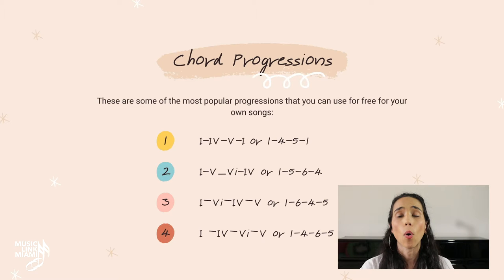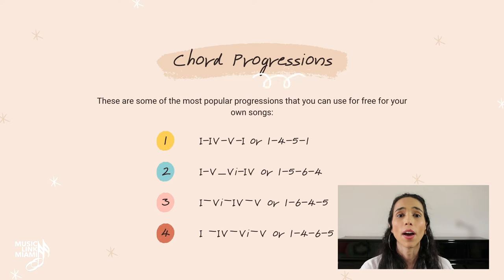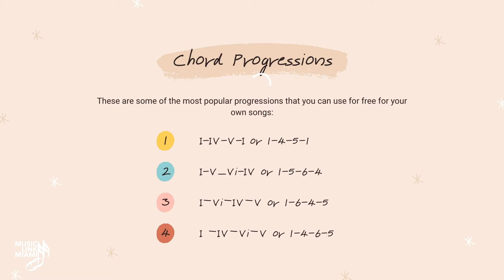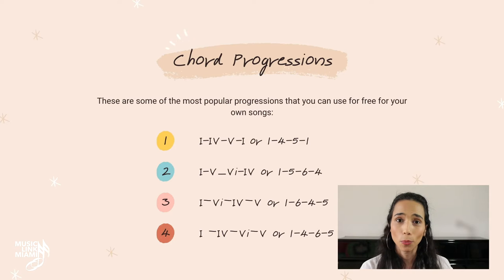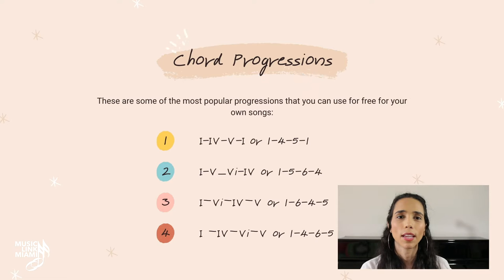The first one is the 1-4-5-1 progression, and in the key of C major it sounds like this. The second one is the 1-5-6-4 progression. The third one is the 1-6-4-5 progression, and finally the 1-4-6-5 progression.